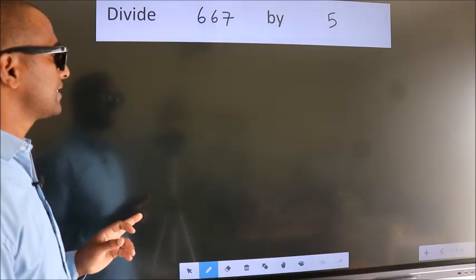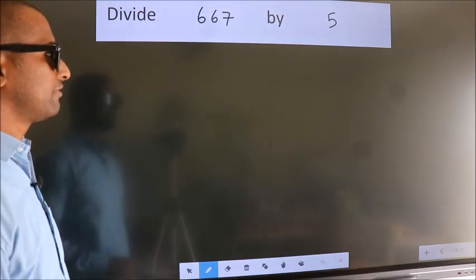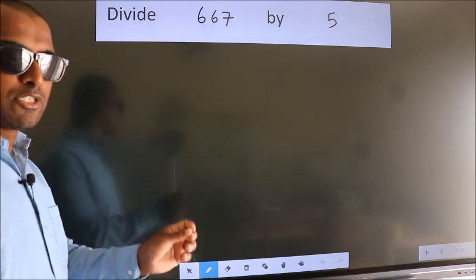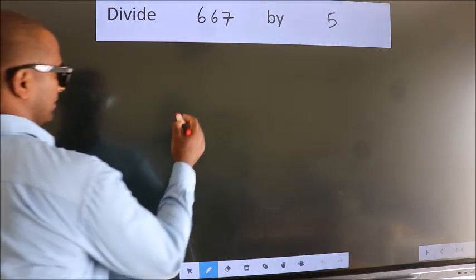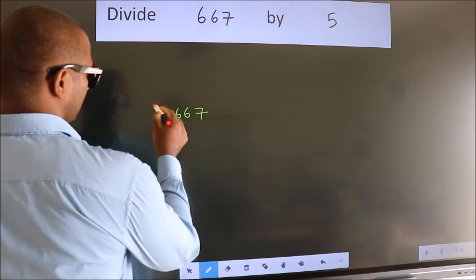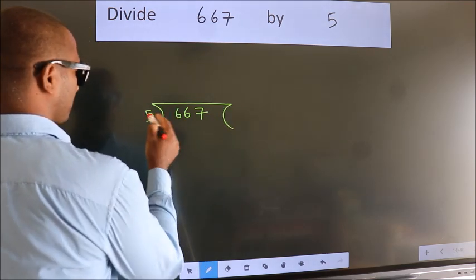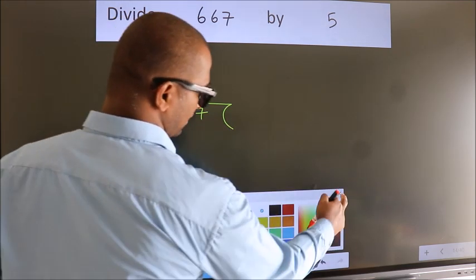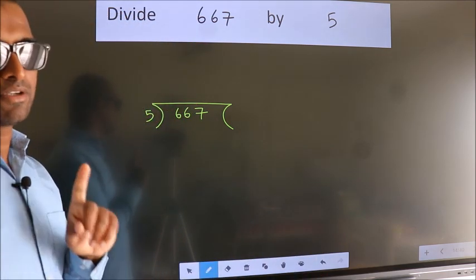Divide 667 by 5. To do this division, we should frame it in this way. 667 here, 5 here. This is your step 1.